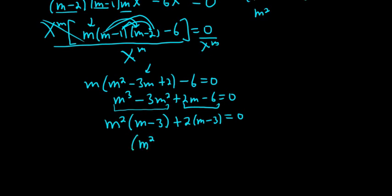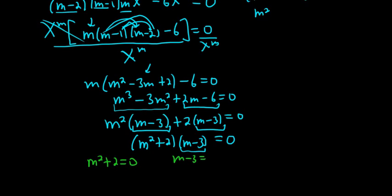So now we can pull out an m - 3, and we're left with (m² + 2)(m - 3) = 0. So we have a product equal to 0. That means each factor is equal to 0. So m² + 2 = 0 and m - 3 = 0.